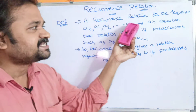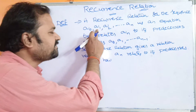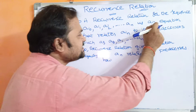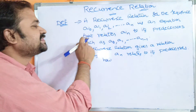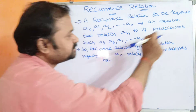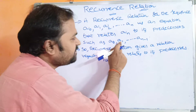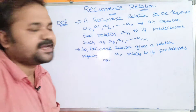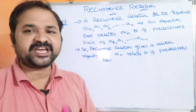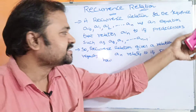A recurrence relation for the sequence a0, a1, a2, ... an is an equation that relates an to its predecessors such as a0, a1, ... an-1. So, a recurrence relation is nothing but an equation that relates an to its predecessors.